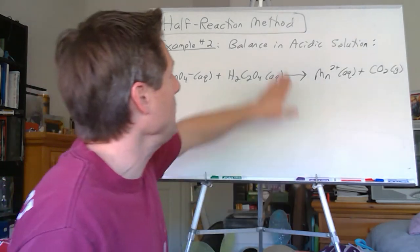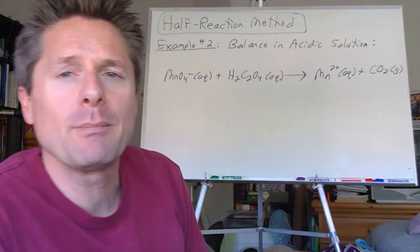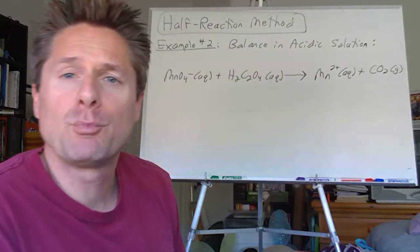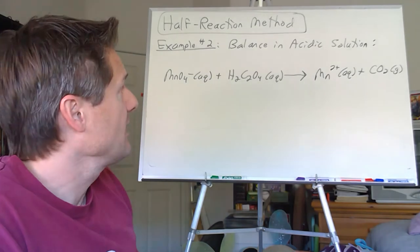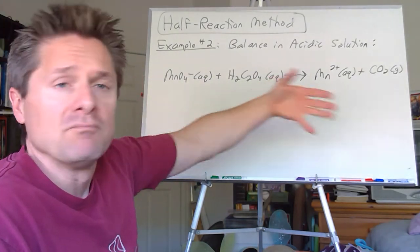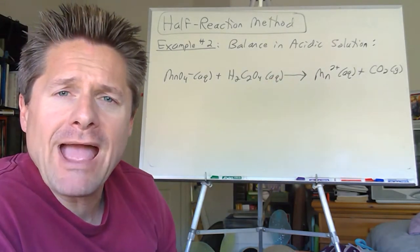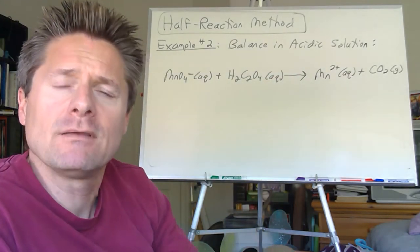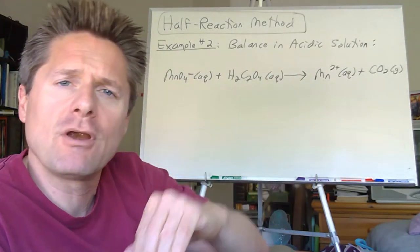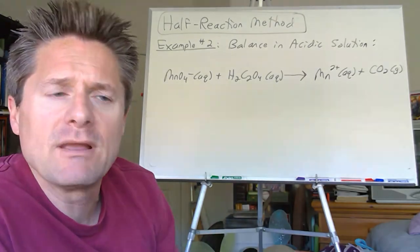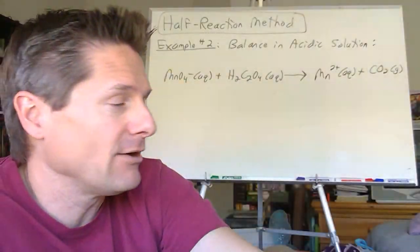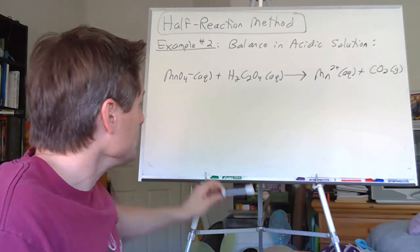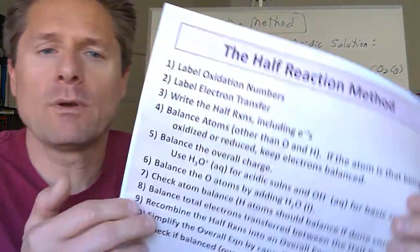Remember: step one — are you in acidic or basic solution? Step two — predict your products unless they're given to you. Step three — separate them into the half reactions, balance them, equalize the charges, and recombine them. Specific instructions are right here.